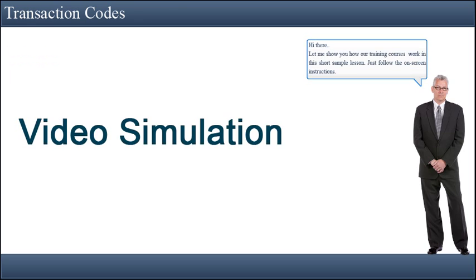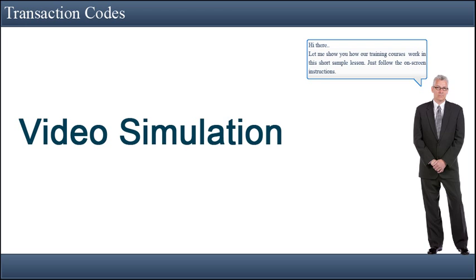Now showing a video simulation on how to create a transaction code for a program. The transaction code SE93 is used for creating your own transaction code. Enter SE93 in the command field and press the Enter key.